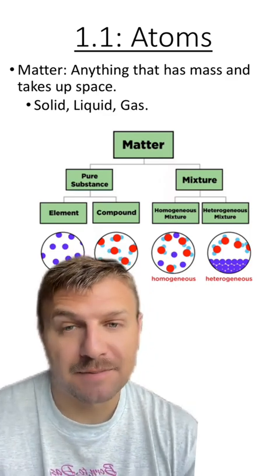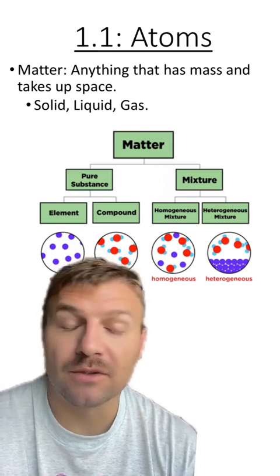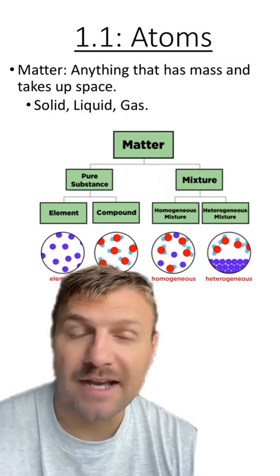Matter is anything that has mass and takes up space. Typically, we like to focus on the three types of matter: solid, liquid, and gas, but there are exceptions to this rule of only having three, like plasma.